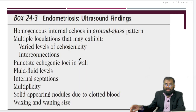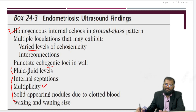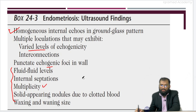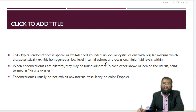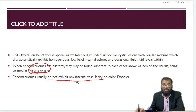Summarizing the endometriosis ultrasound findings: homogeneous ground glass appearance of the cyst with varied levels of echogenicity; sometimes punctate echogenic foci may be seen. Few important signs include multiplicity, fluid-fluid levels may be seen, sometimes internal septae may be seen. Waxing and waning size is very important because with each cycle there is bleeding, so the size keeps on increasing. Follow-up is a very important method to diagnose endometriosis. We have seen about kissing ovaries, and they do not exhibit any internal vascularity on colour Doppler study.